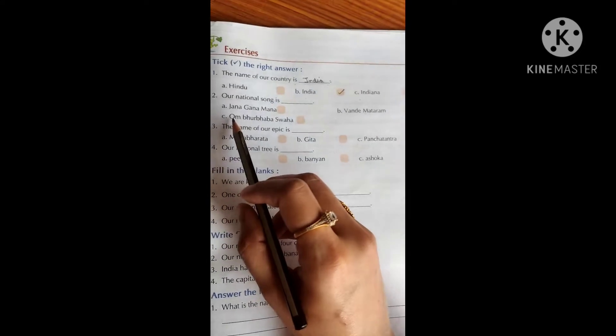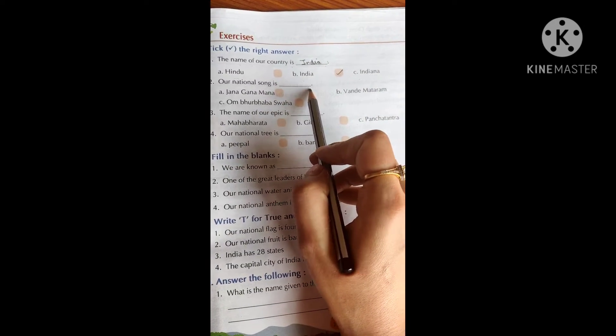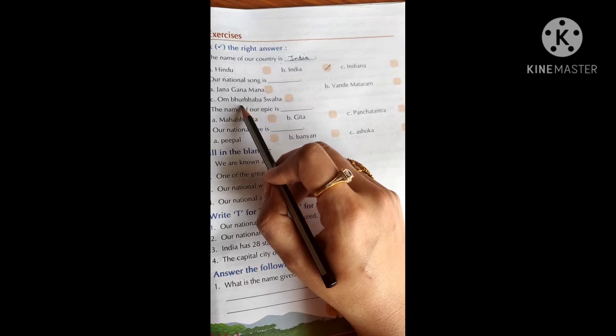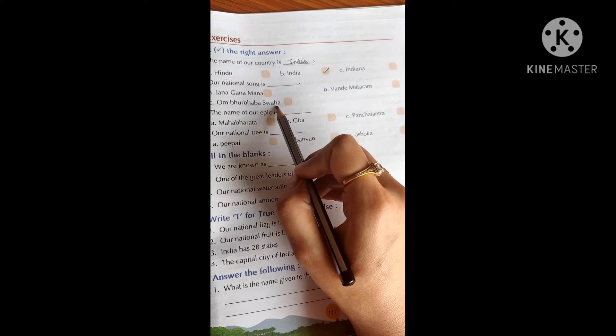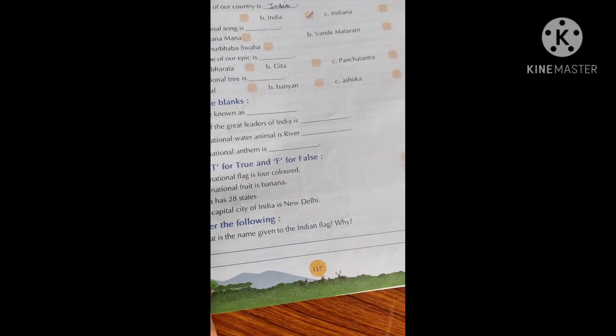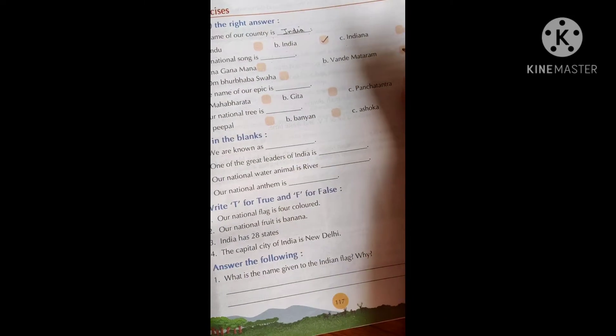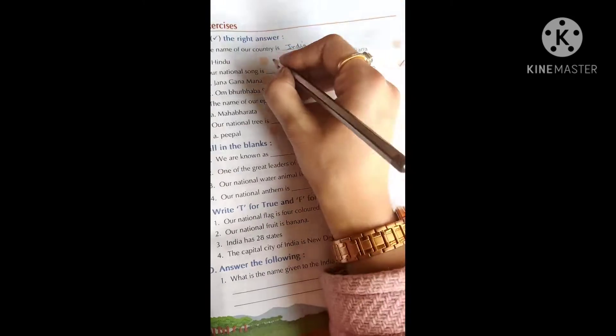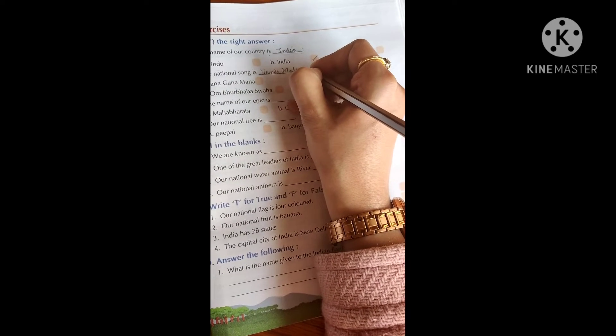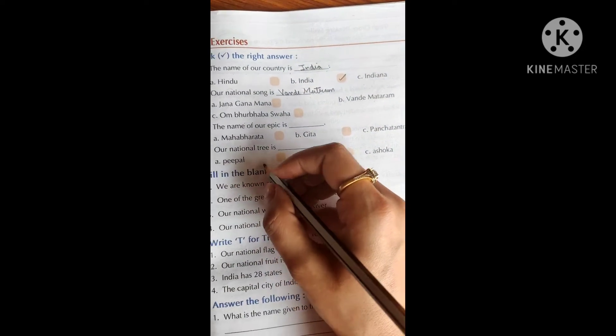Let's move to the next. Our national song is dash. Janaganaman, Vandemataram, Om boor bahaswaha. Which is our national song? Yes. Our national song is Vandemataram. Very good. So we will write Vandemataram here.